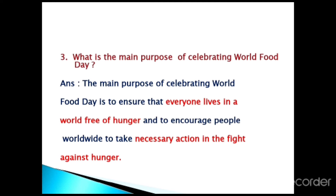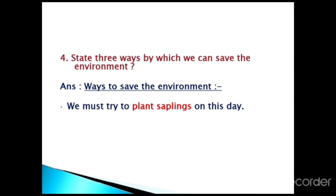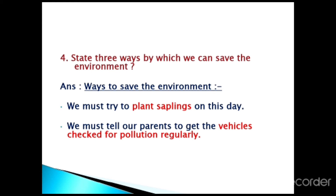The fourth question: state three ways by which we can save the environment. Ways to save the environment are: first, we must try to plant saplings on this day. Second, we must tell our parents to get the vehicles checked for pollution regularly. Third, we must not burn waste in the open.